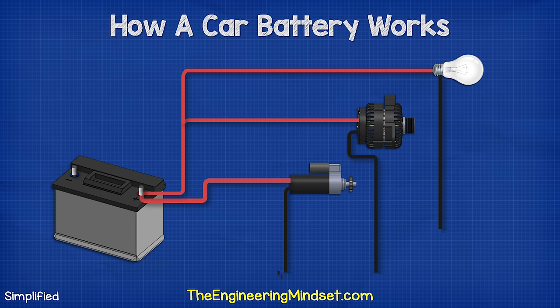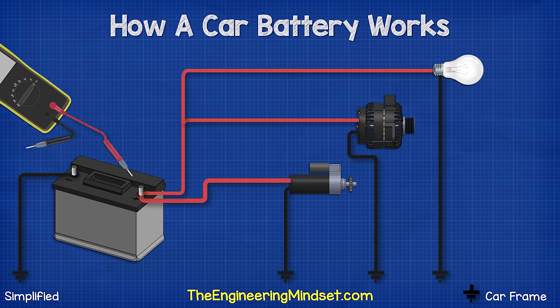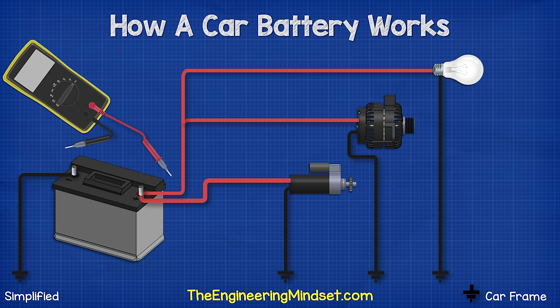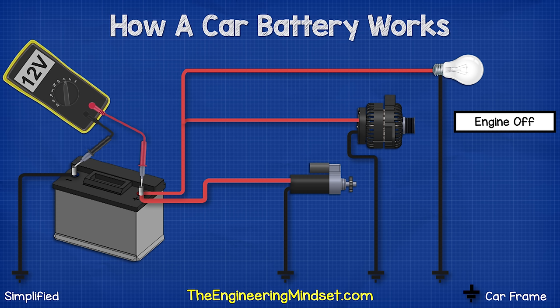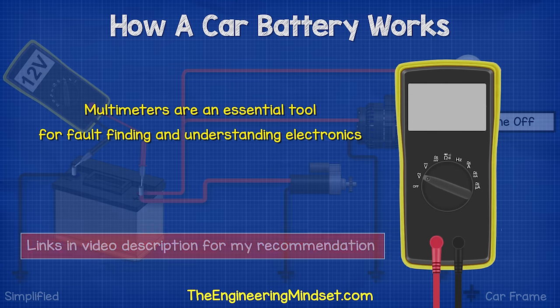To test the voltage of a car battery, simply switch to the DC voltage setting on your multimeter, then connect the red lead to the positive and the black lead to the negative. We should see a voltage of around 12.6 volts. If it's below 12 then the battery is not functioning properly.